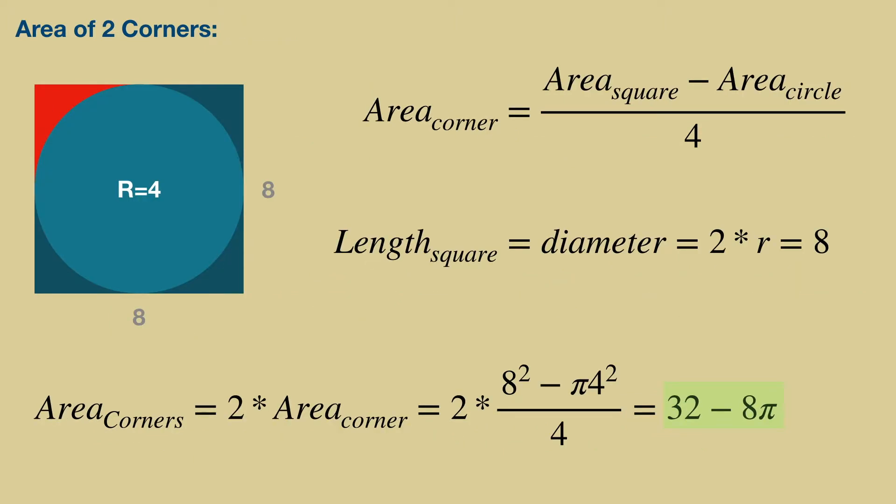The area of one of the red corners is the difference between the square and the circle areas divided by 4, since there are 4 corners. From the diagram we see that the square has a length of 8, since it spans the diameter of the circle. Remember that the diameter is 2 times radius.